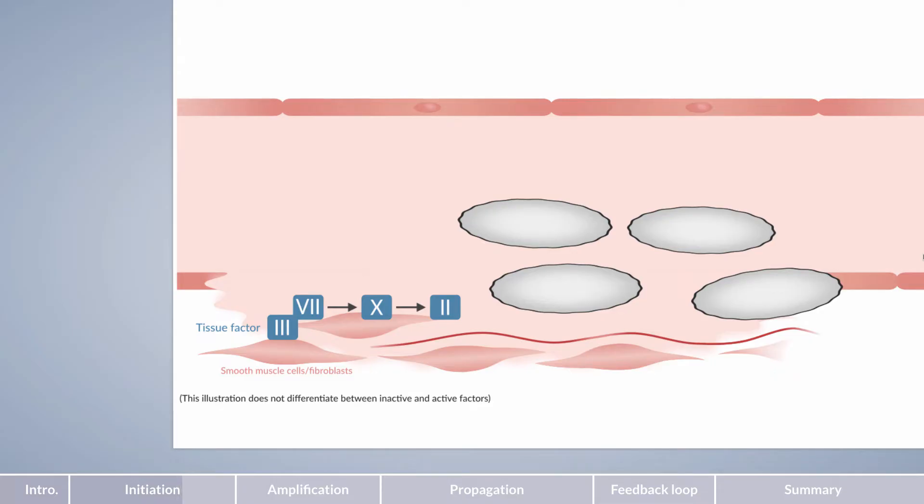In contrast to the cascade model, clotting factors don't only react with one another in blood, but specifically on the cell membrane surface, which is the central location of coagulation in the cell-based model.